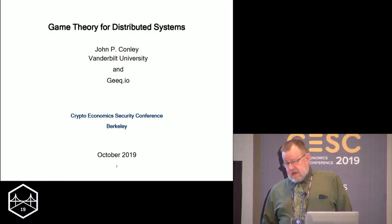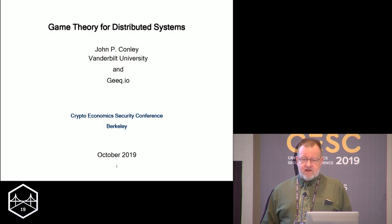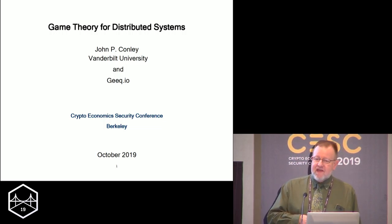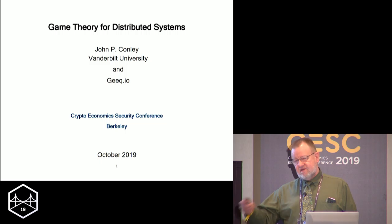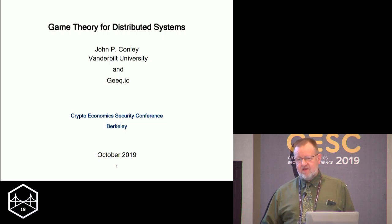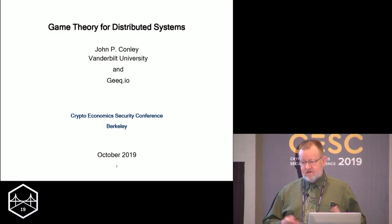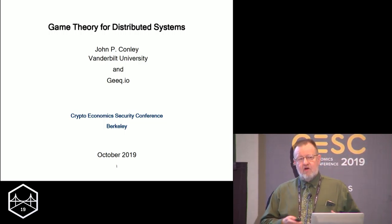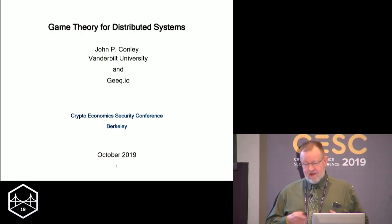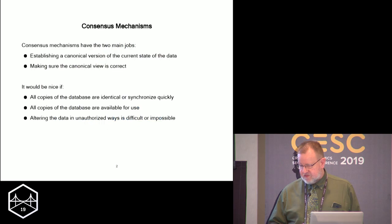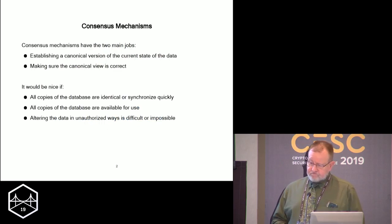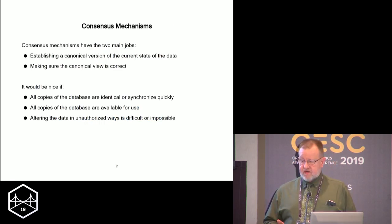But on the other side, economists are not so good at understanding the computer science. And not only computer science, there are other things you've got to bring in like law and accounting and regulation. Blockchain is actually a really all-inclusive thing and you fail anywhere and the system doesn't work. So this is an examination of distributed systems. Let's start with talking about consensus mechanisms and what they're supposed to do.